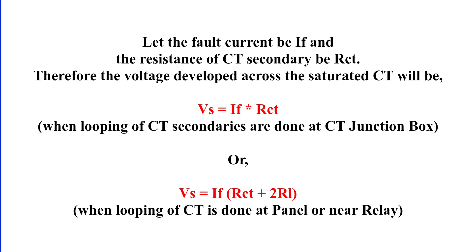If the fault current is IF and the resistance of the CT secondary winding is RCT, then the voltage developed across the saturated CT is Vs equals IF multiplied by RCT when paralleling is done at CT junction box. Or if paralleling is done at the relay panel or near the relay end, we must also consider the lead resistance RL giving us Vs equals IF multiplied by the sum of RCT and two times RL.